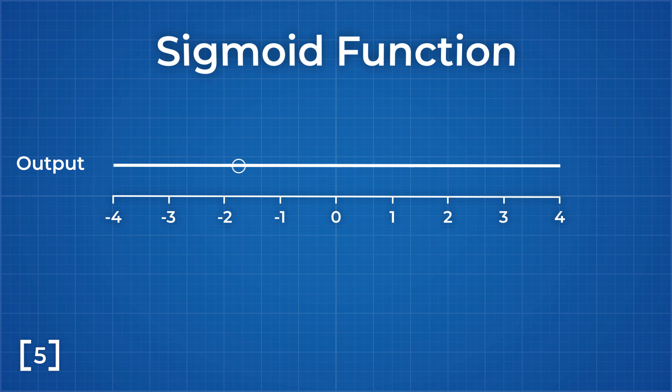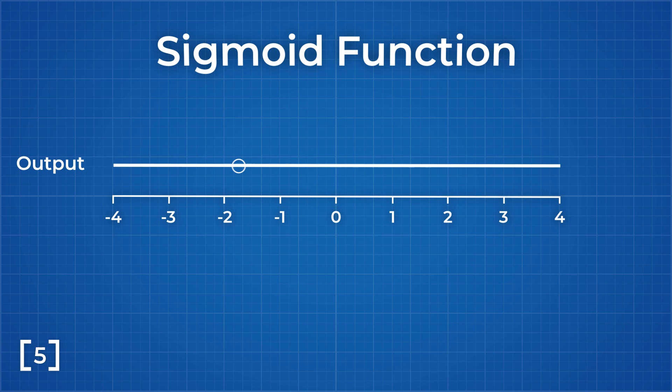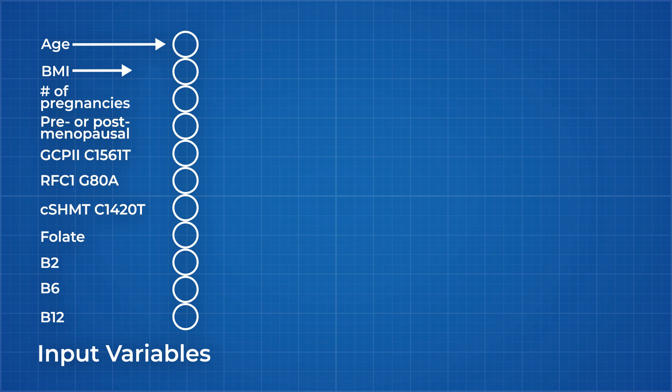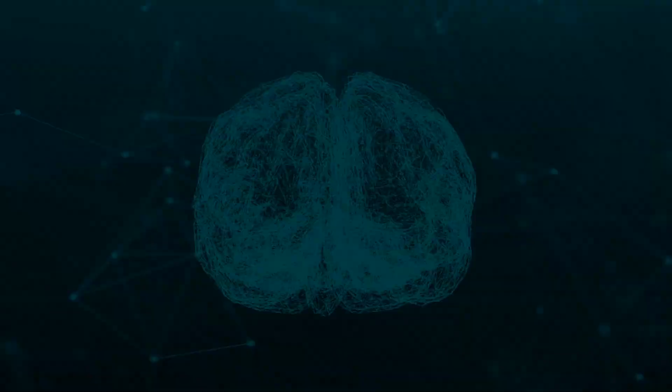As the input data from each patient flows through the network for the first time, it will arrive at the output layer as some new, basically random value between 0 and 1, which is almost guaranteed to be incorrect. The next step is where the learning comes in.